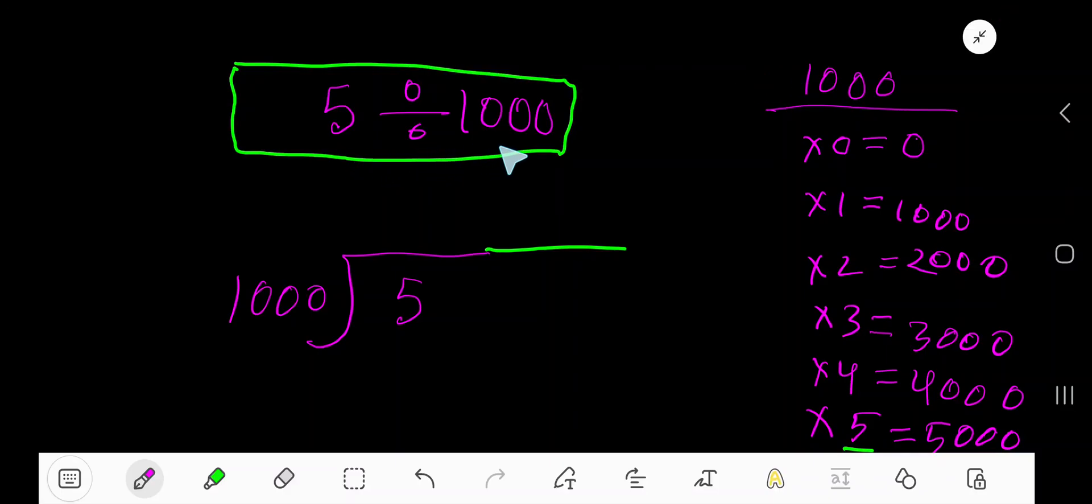5 divided by 1,000. 1,000 goes into 5 how many times? 0 times, because 5 is less than 1,000. 0 times 1,000 gives you 0. If you subtract, you get 5.